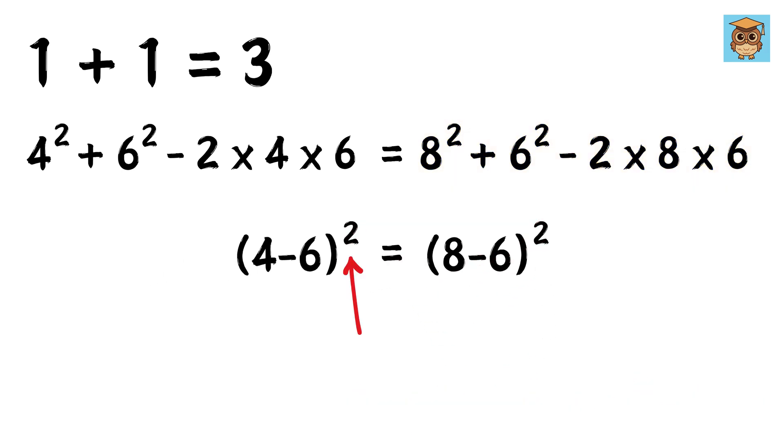Now look, we have a square on both the left-hand side and right-hand side, right? So we can simply cancel or eliminate them from both sides, and we are left with 4 minus 6 equals 8 minus 6.